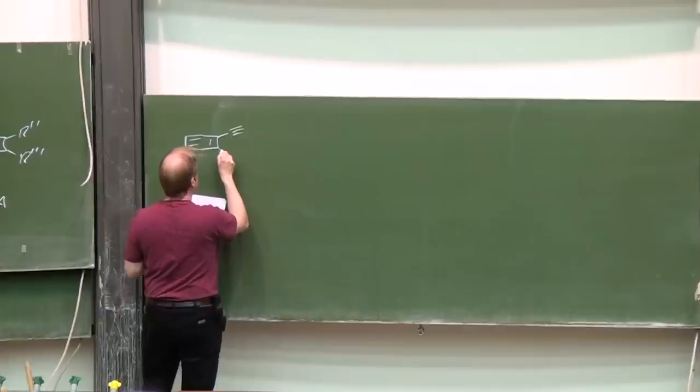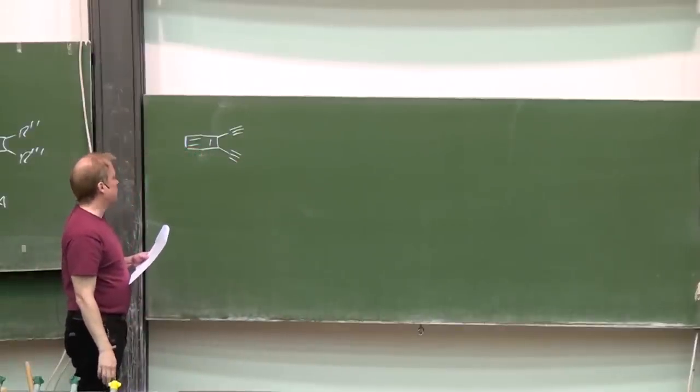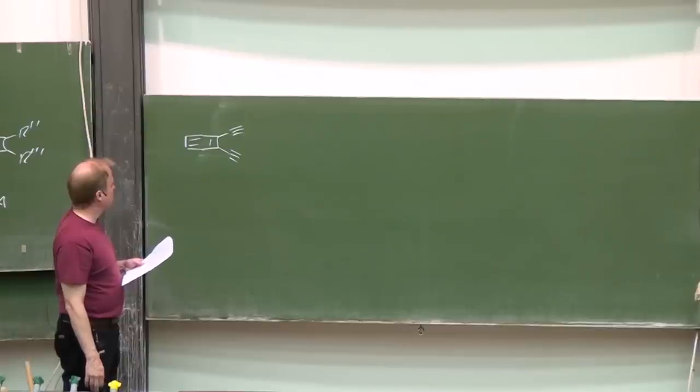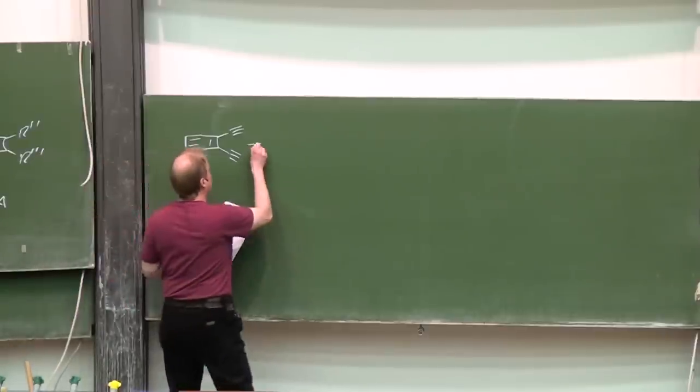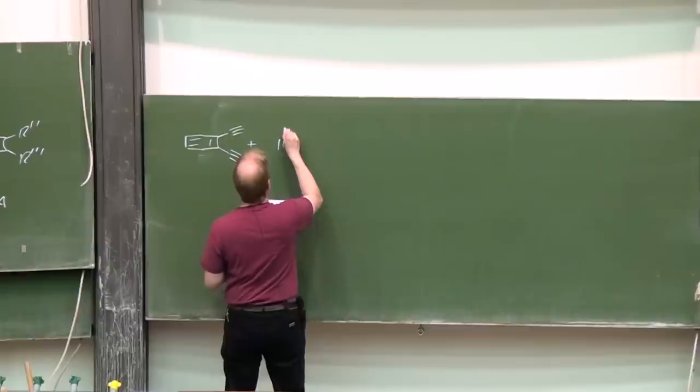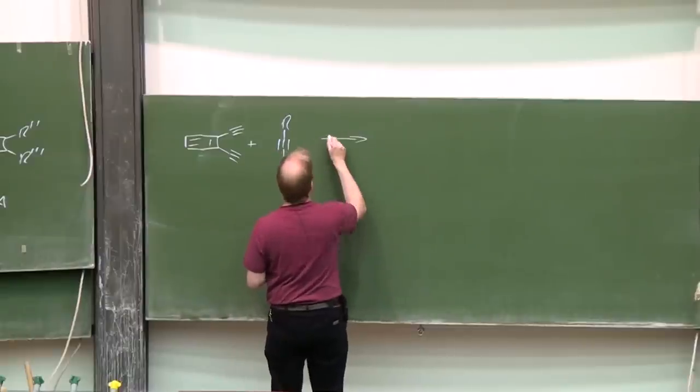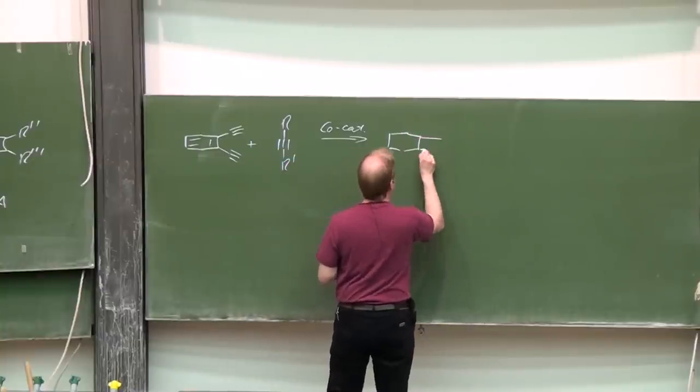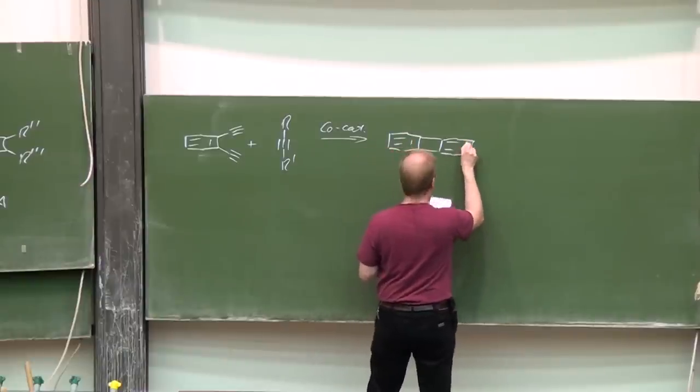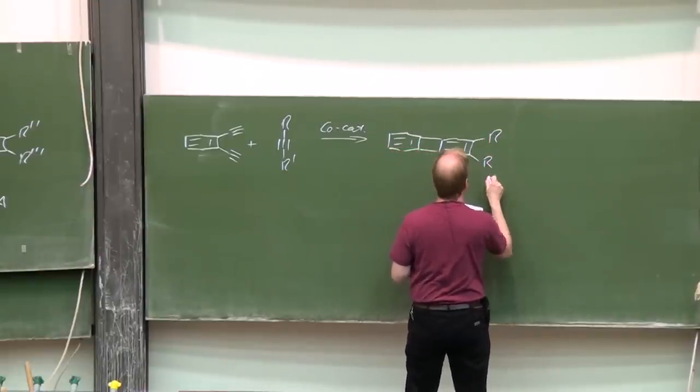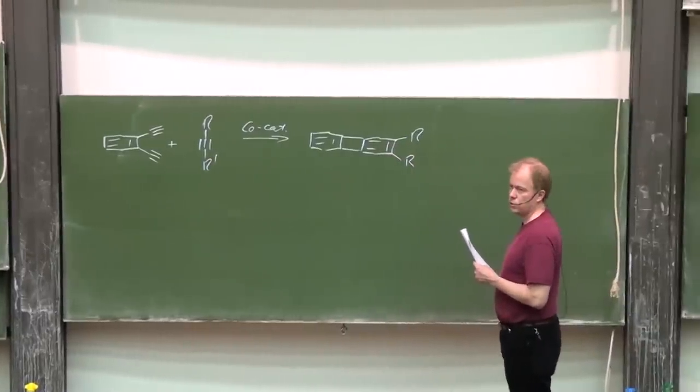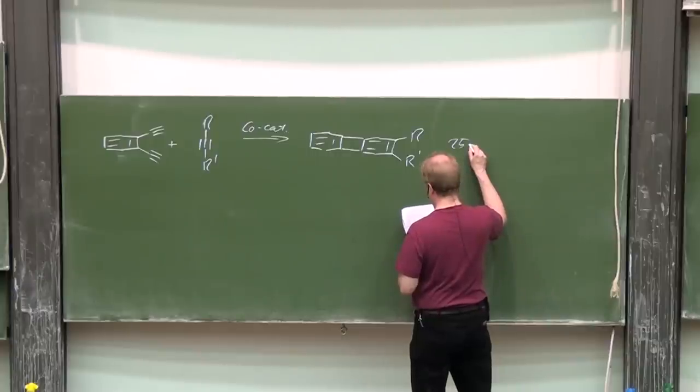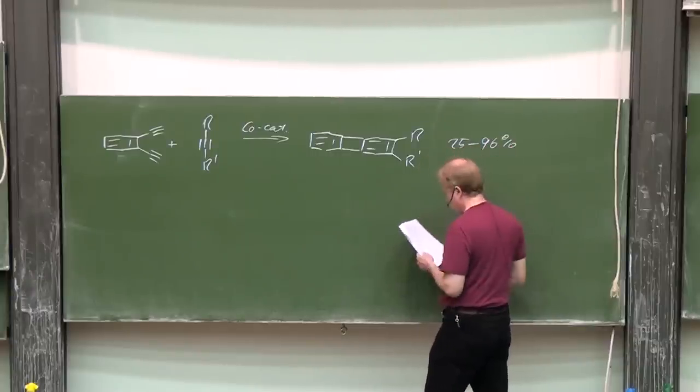As you should know from the palladium chemistry, palladium catalyzed reactions we discussed, it's rather easy to synthesize by Sonogashira coupling reactions systems like that. And the result then are structures like that, dibenzocyclobutadienes which are obtained all in moderate to very good yield.